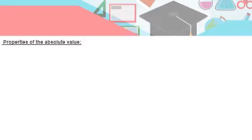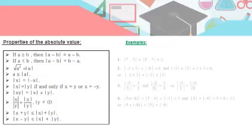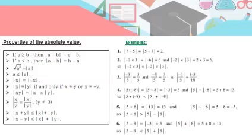We also learned some properties of the absolute value. For example, absolute of x over y equals absolute of x over absolute of y. Also, absolute of x times y equals absolute of x times absolute of y. So you can distribute the absolute value, and those were some examples of the properties.